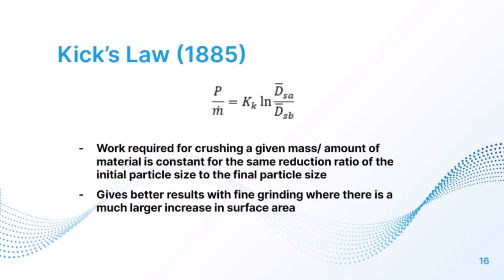Kick's Law, proposed in 1885, states that the work required for crushing a given mass of material is constant for the same reduction ratio of initial to final particle size. It gives better results for fine grinding where there is a much larger increase in surface area. The equation is: P/ṁ = K_K × ln(D_SA / D_SB), where K_K is Kick's constant.